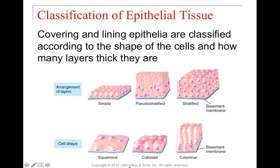We can also look at cell shape. If the cells look really flat and amorphous, they're going to be squamous cells. Cuboidal cells kind of explain themselves — they look like little cubes, little pans of bread. We also have columnar, which is arranged in long columns. So we'll discuss whether cells are simple, pseudostratified, or stratified, as well as whether they are squamous, cuboidal, or columnar. For the lab, we'll have a histology section where you'll be looking at different types of epithelial tissue under the microscope.